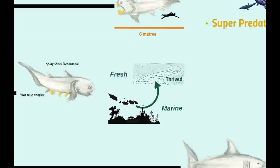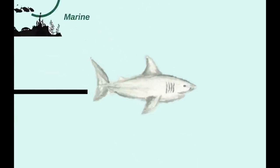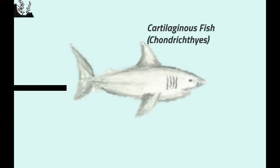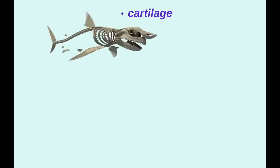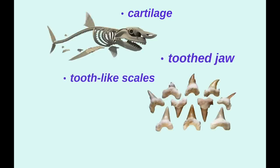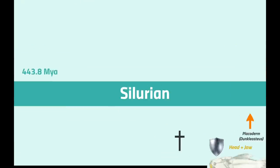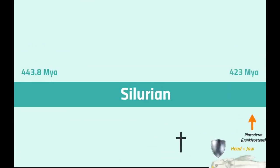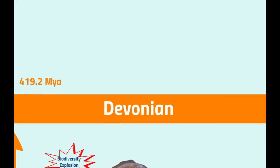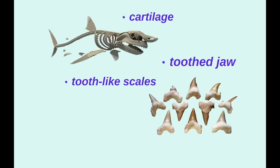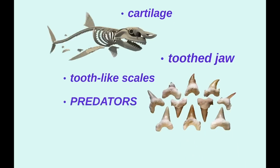The Chondrichthyes is a large class of fish which includes sharks, skates, rays and chimeras. All members are characterized by a skeleton made of cartilage instead of bone, toothed jaws, and a body covered in tooth-like scales. The first cartilaginous fish are seen in the late Silurian in the form of early sharks. By the Devonian, we see evidence of sharks growing relatively large and taking up their traditional role as predators.